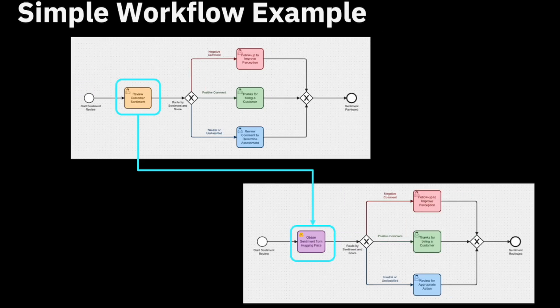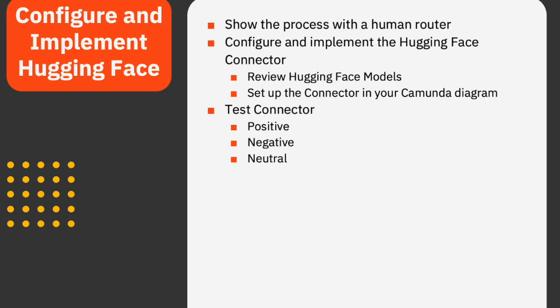We're going to use a simple workflow example where a comment comes in, mimicked by a form. A human reviews the sentiment and, based on their decision — positive, negative, or neutral — it gets routed to the proper department. We'll replace that human step with a Hugging Face connector that uses a customer sentiment machine learning model. The model will assess the comment and its confidence level, then make the routing determination automatically instead of having a human involved.